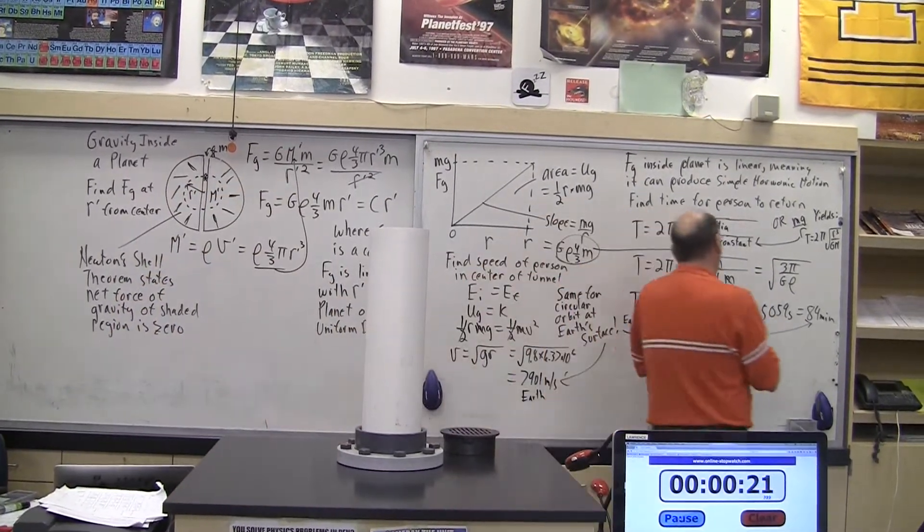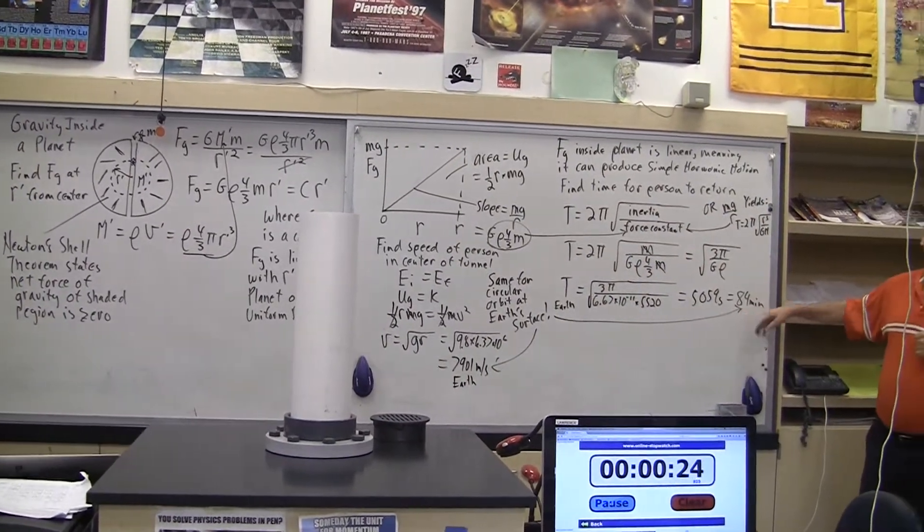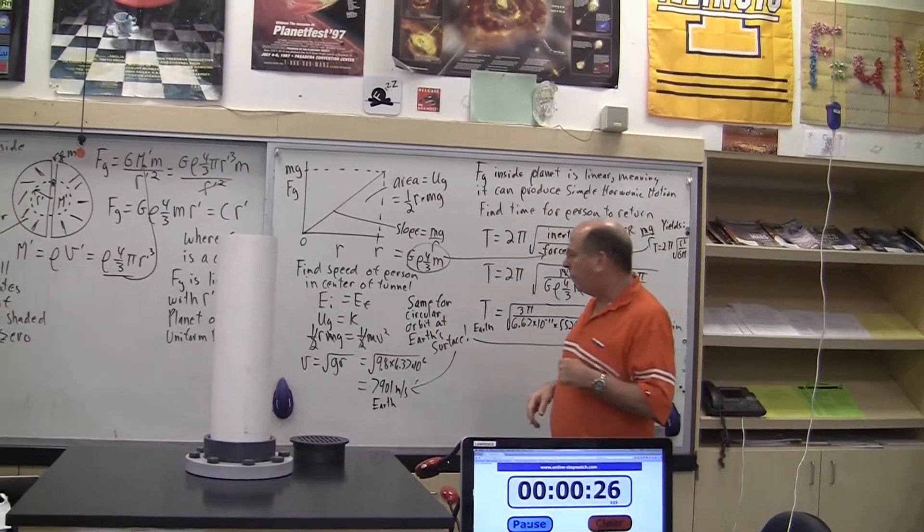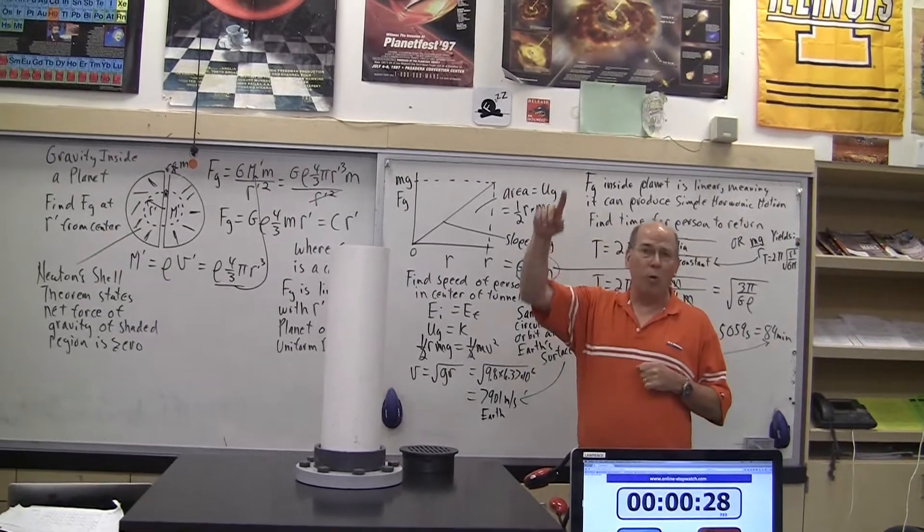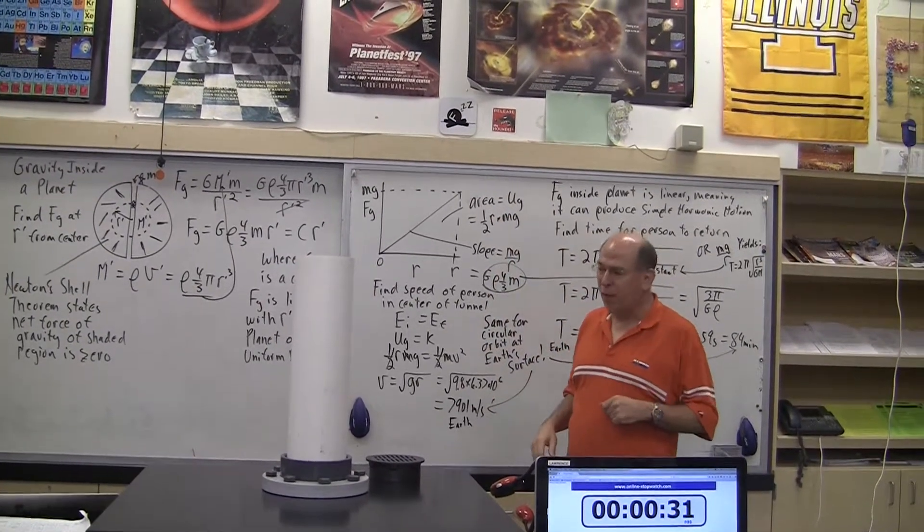And when we get to the end, we find out it's going to take 84 minutes to go all the way through the Earth and come back, assuming uniform density.